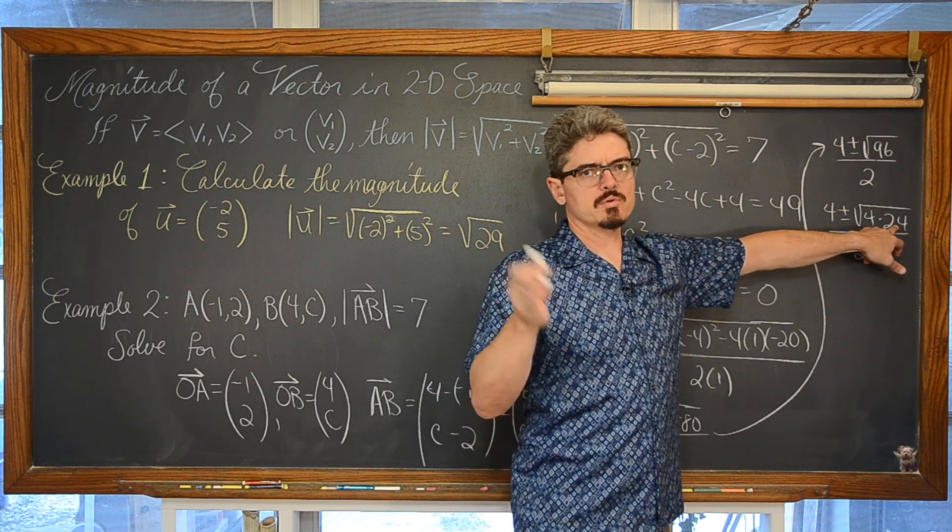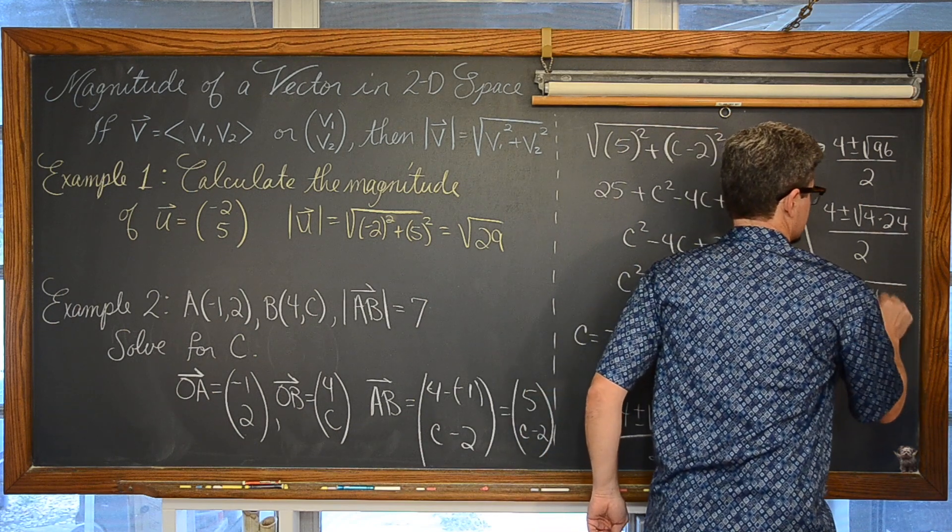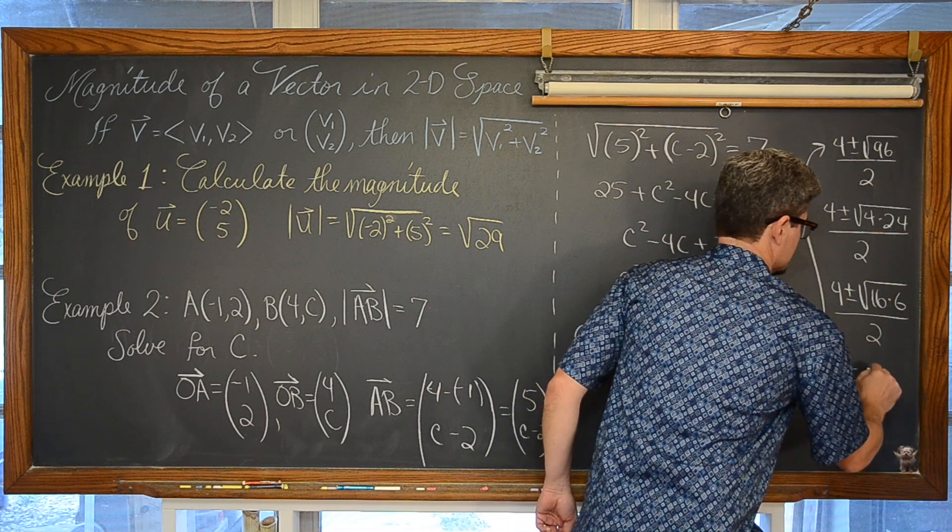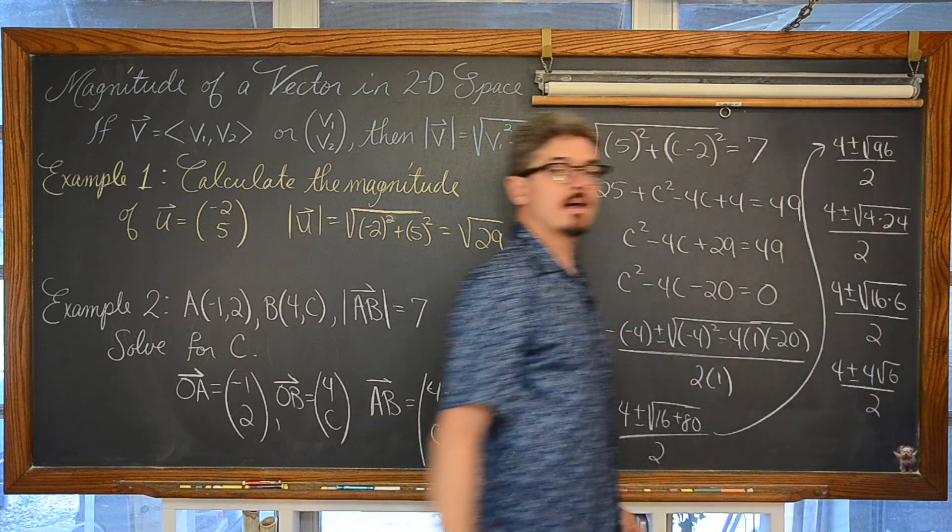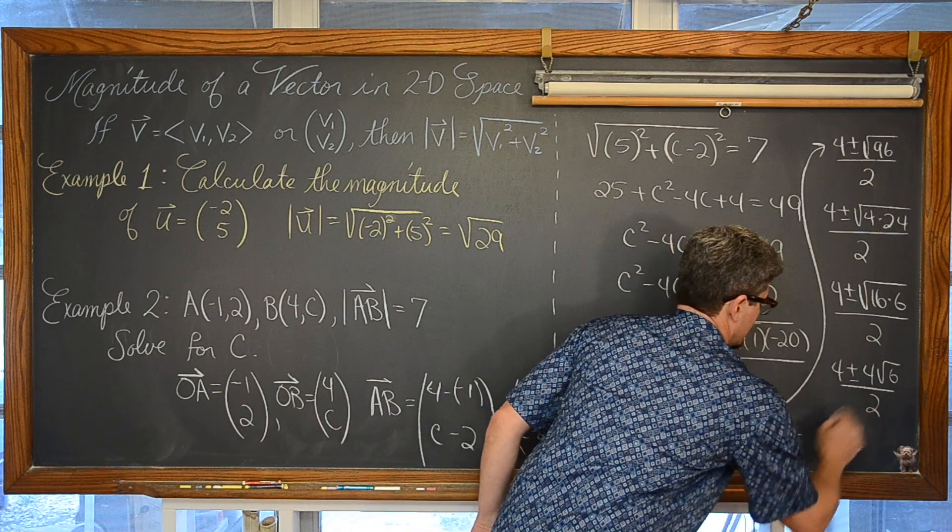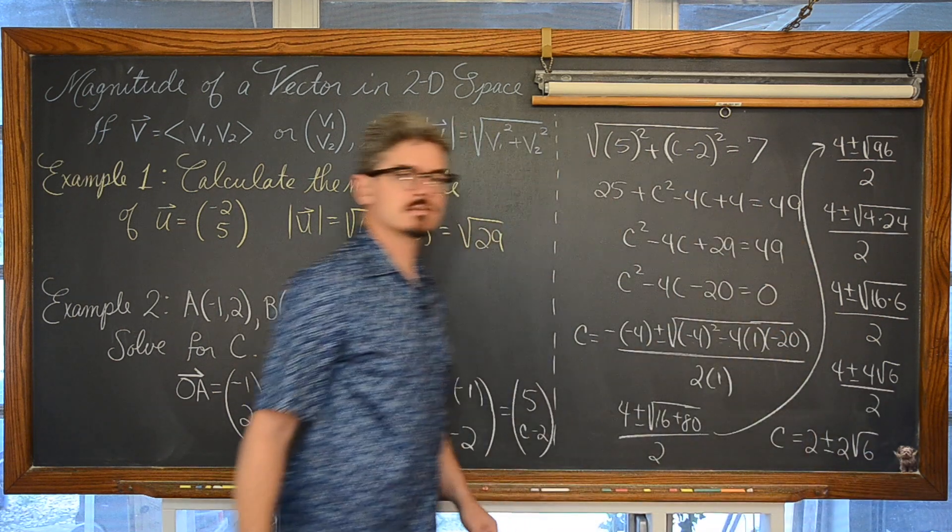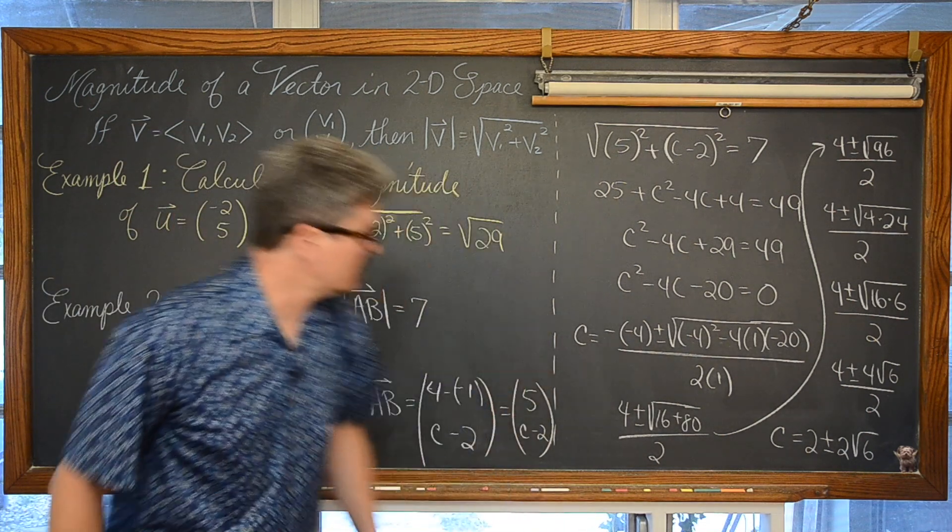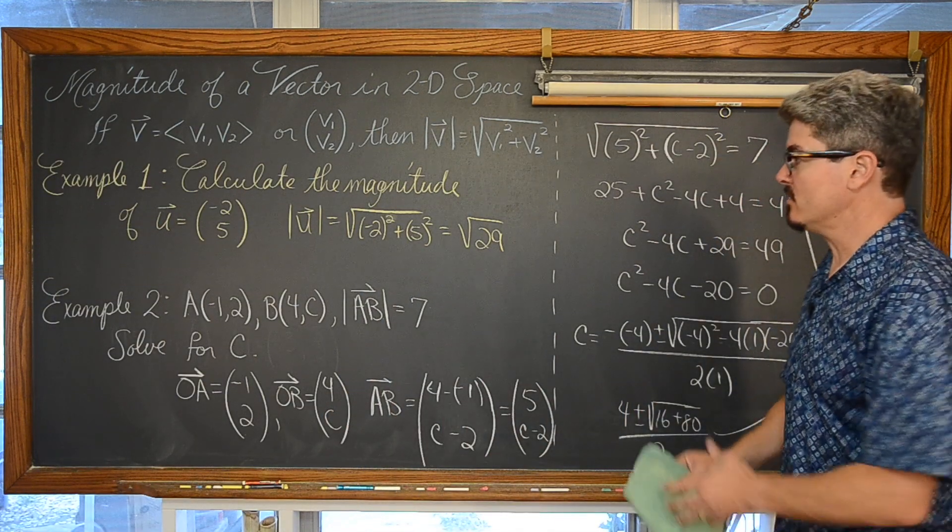So our values of C are equal to 4 divided by 2 is 2 plus or minus 4 divided by 2 again. Square root of 6. Now let me double check my work just because it is not a bad idea with me. I make a lot of silly mistakes.